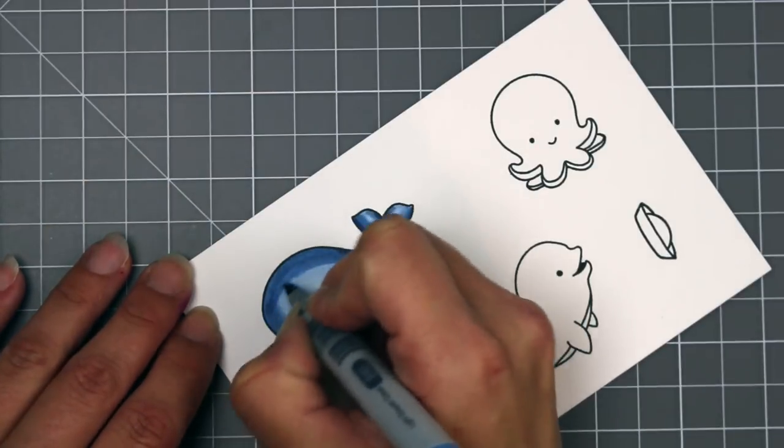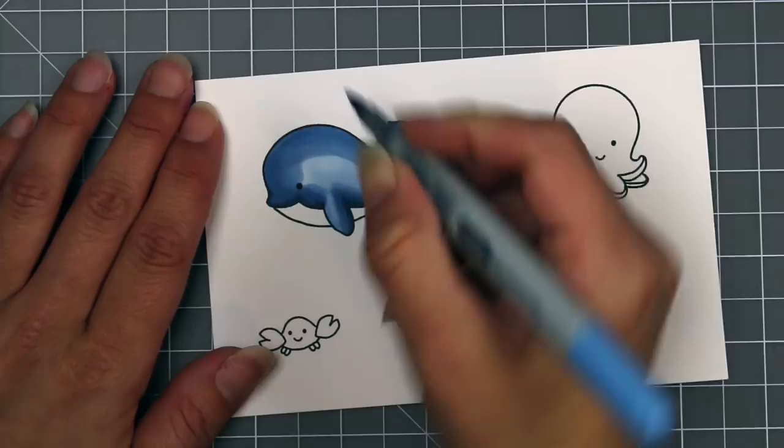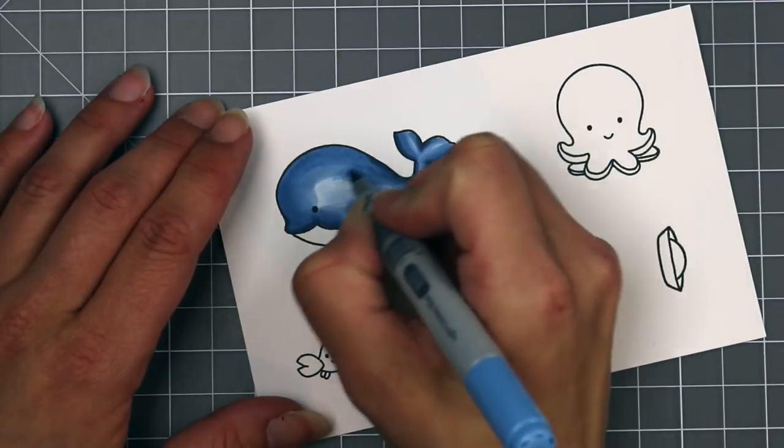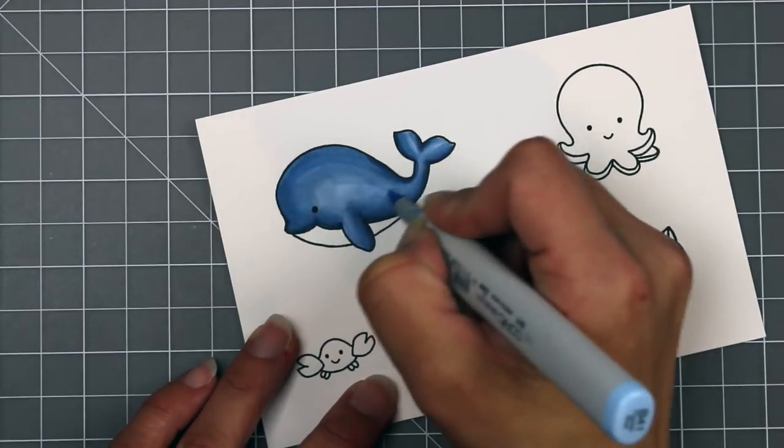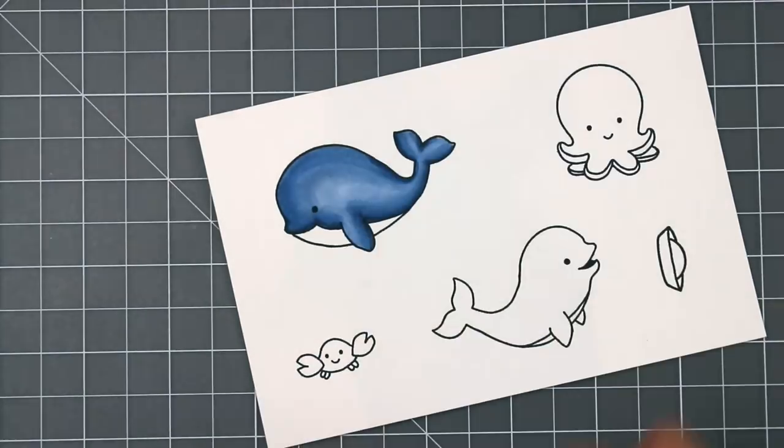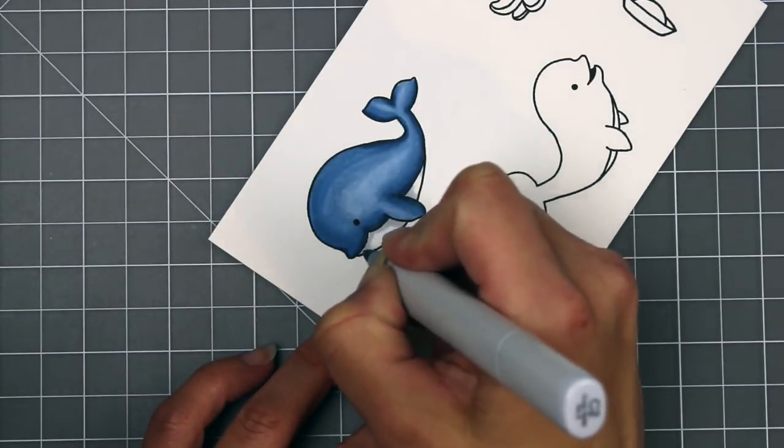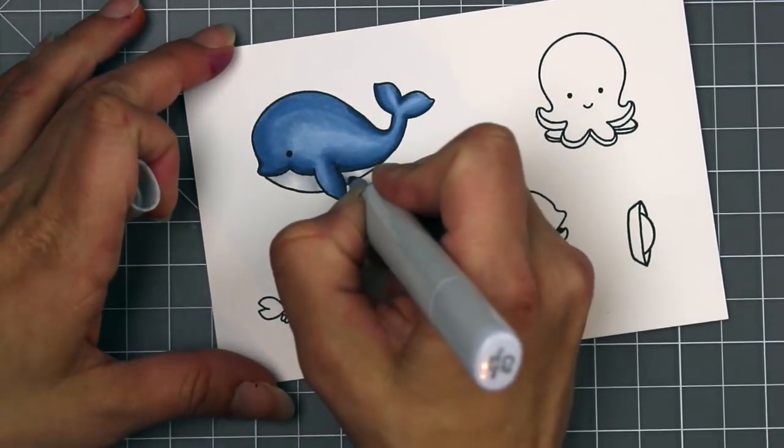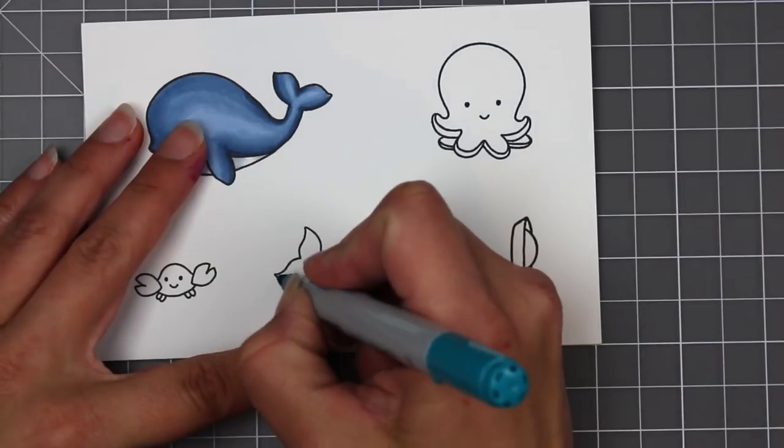I am coloring this on Neenah Solar White cardstock. That is my preferred choice of Copic coloring. I mainly started using that cardstock because that is what I use for all of my cards. So I know that whether I'm cutting out the images or not, my whites are going to match because sometimes you get an off color white and that just personally bothers me when I make my cards. So if I'm using the same cardstock throughout my entire card, I know it's all going to match.